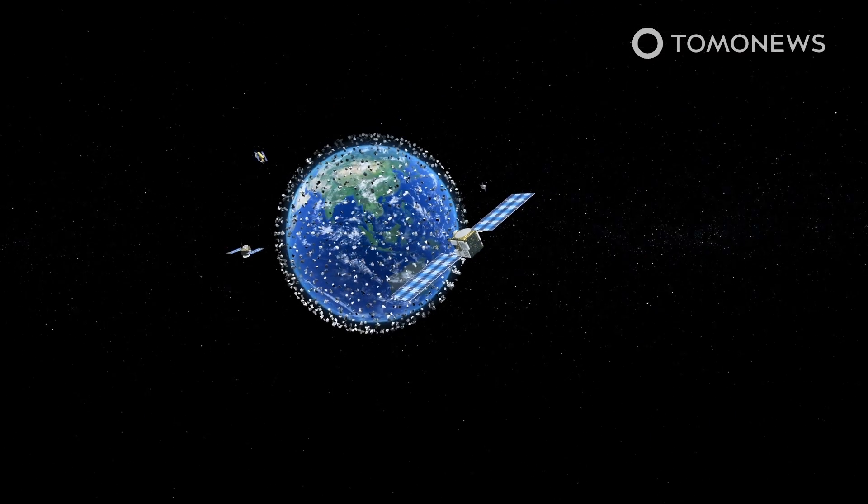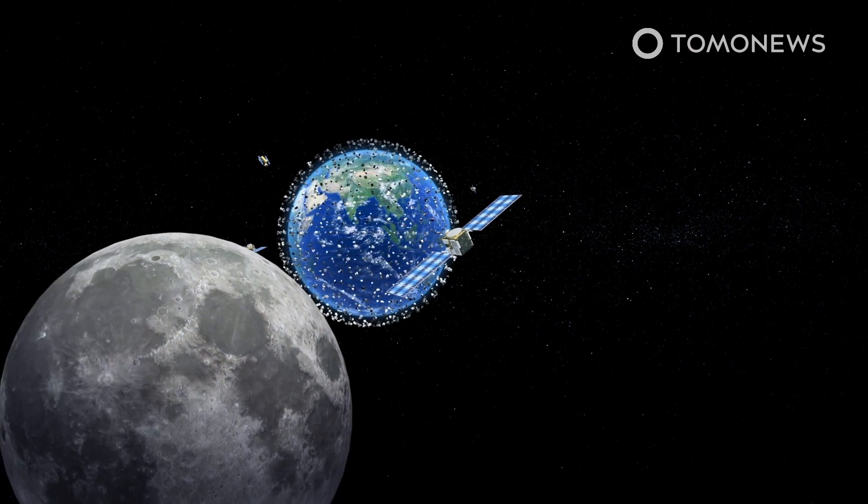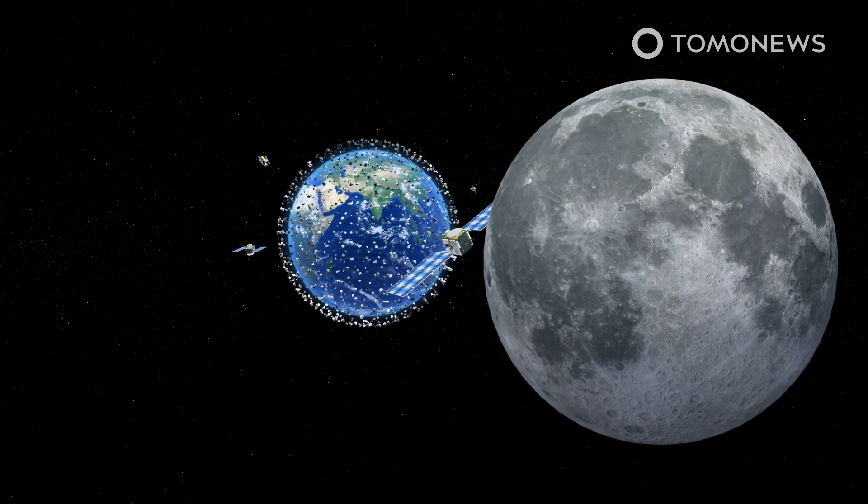The Earth's busy orbit is occupied by space junk, nearly 5,000 artificial satellites, the moon, and now a possible temporary resident mini-moon called 2020 CD3.